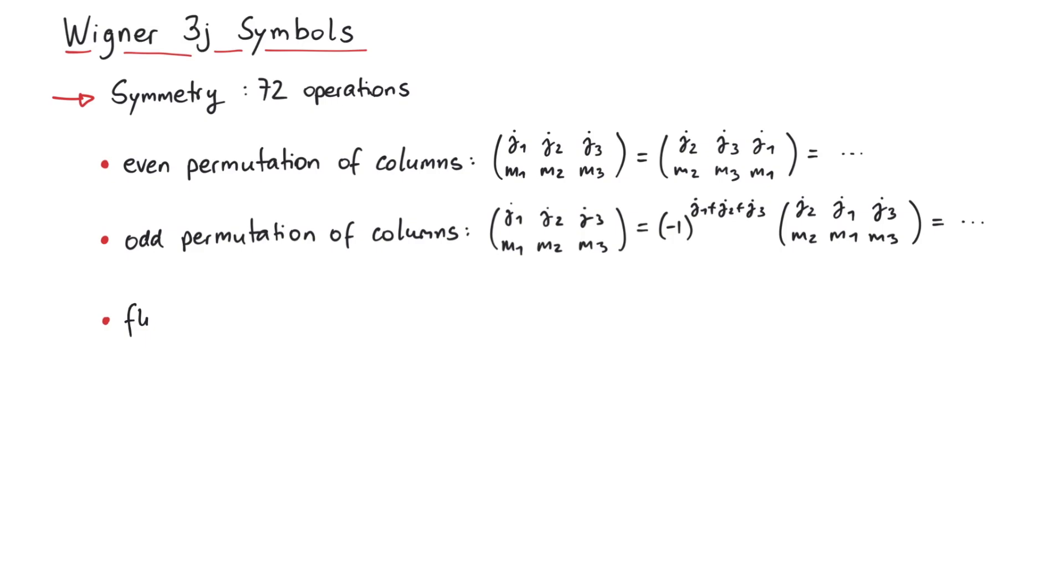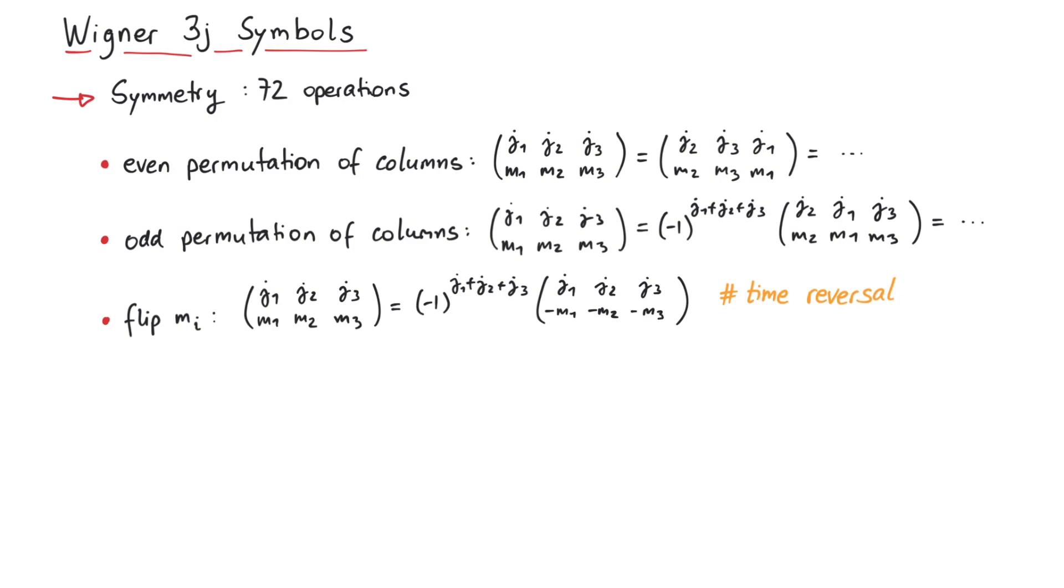Next, you can flip the signs of all magnetic quantum numbers, and if you include the phase, the value stays the same. This corresponds to a time-reversal symmetry of the participating jm states, since under a time-reversal the magnetic quantum number picks up a minus sign. This is due to the fact of how spherical harmonics transform under complex conjugation, since in position space time-reversal is just complex conjugation.